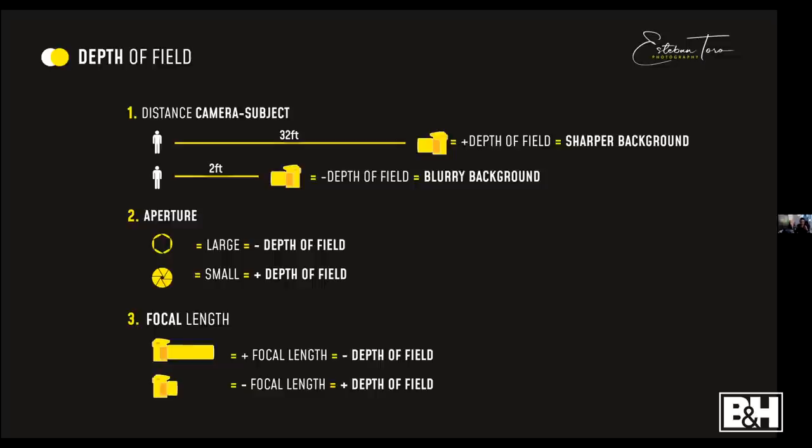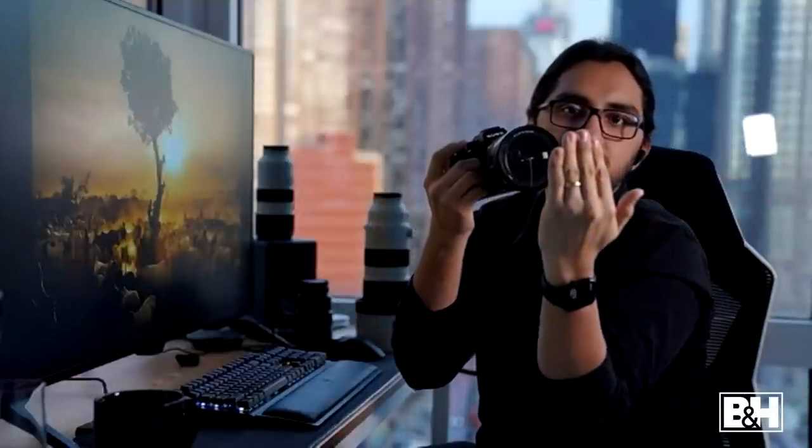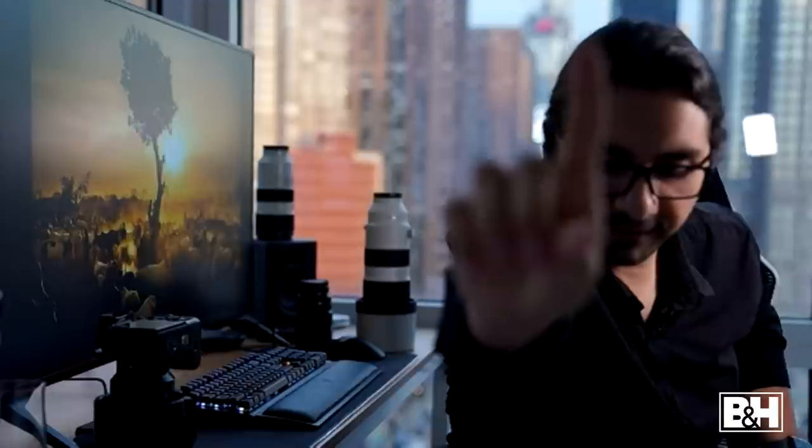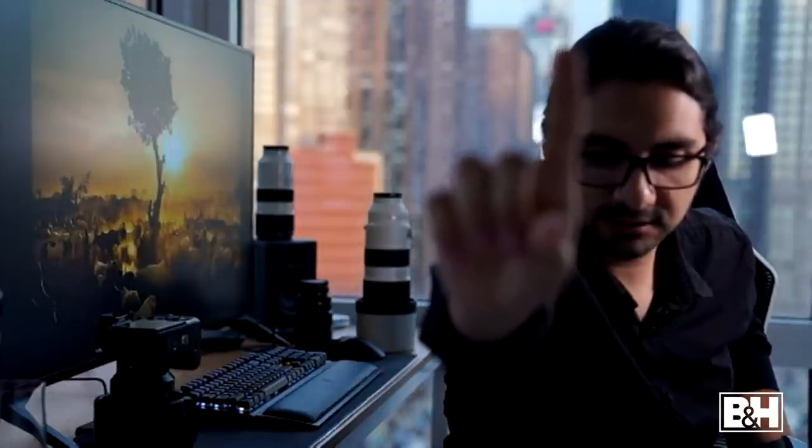The first thing that modifies depth of field is the distance between the camera and the subject. Here's a graphic: if my hand is further away, I will have a sharper background and more depth of field. If I get closer, the depth of field also gets shallower. Look at this — my finger right now is not in focus, but if it gets further, it comes into focus. The closer you are to a subject, the less depth of field; the further away, the more depth of field.